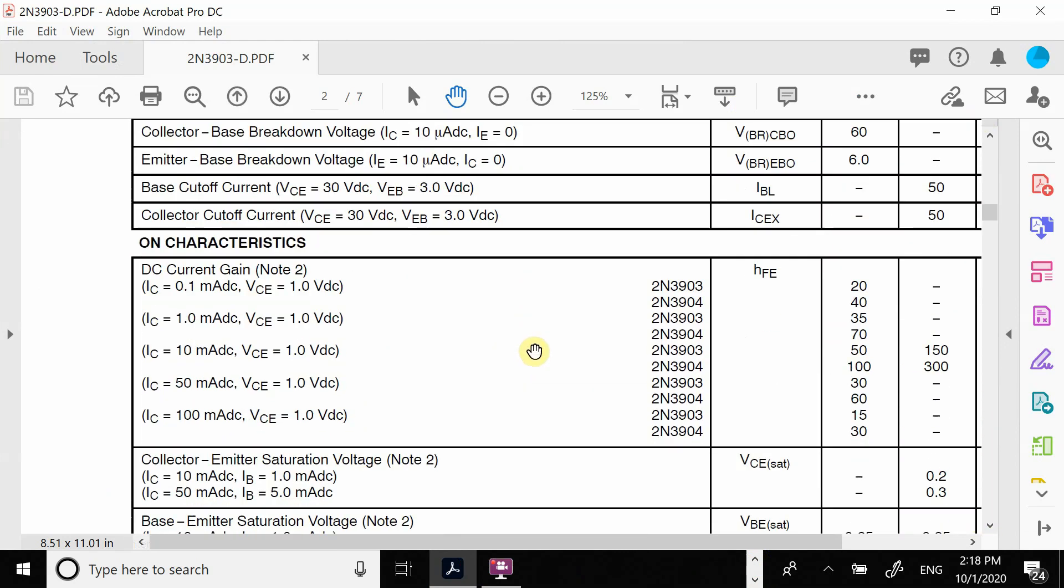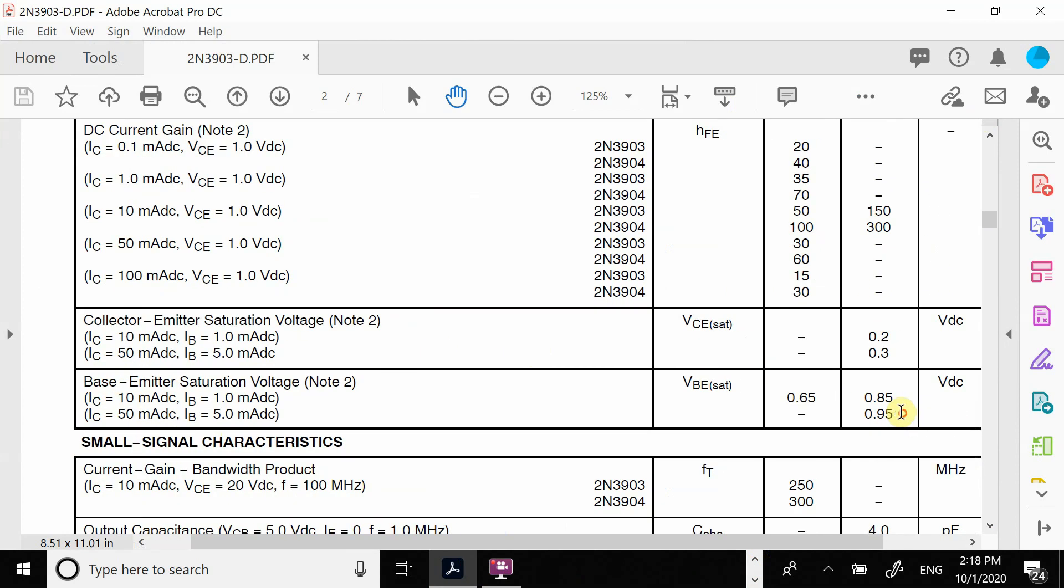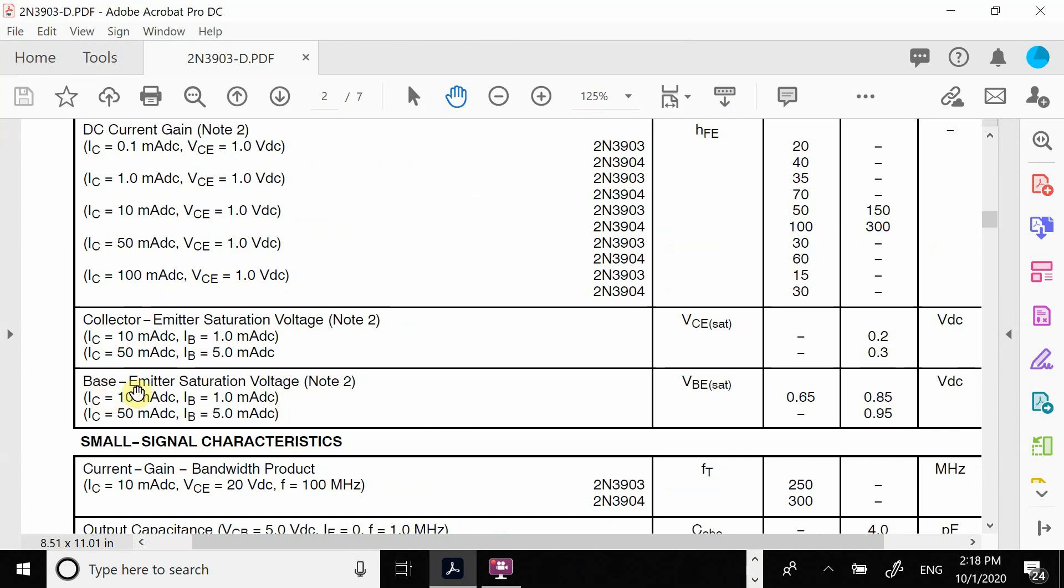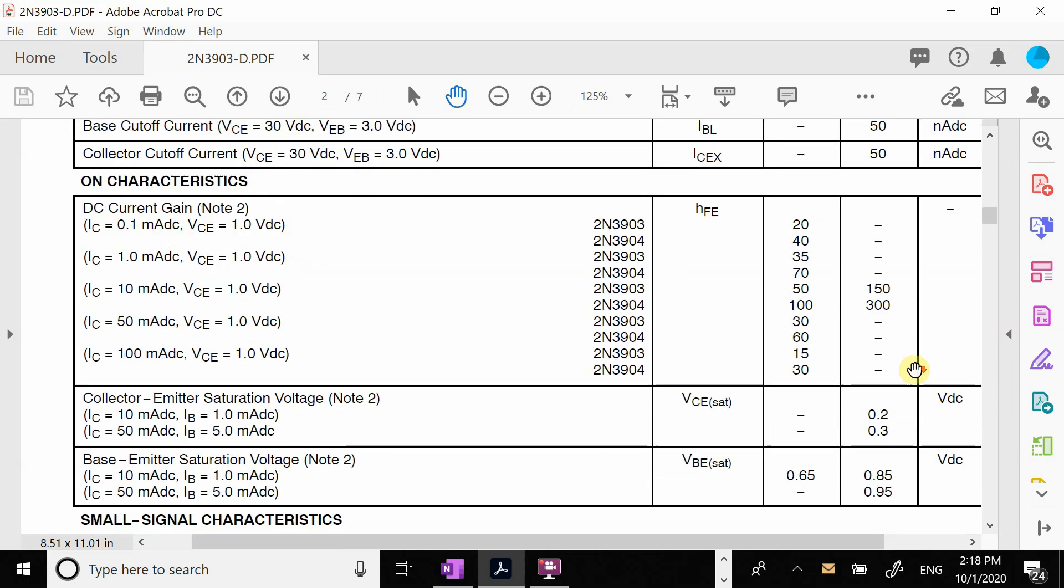And so we're going to look at these on characteristics. So here is our base emitter saturation voltage and you see that if we're running about 10 milliamps it's around the 0.65 to 0.85. You see these are the min and the max values that it can be.